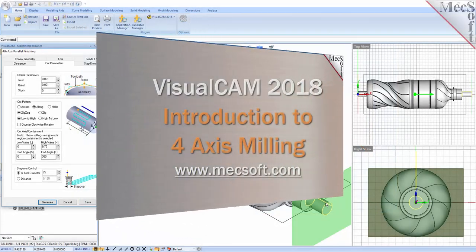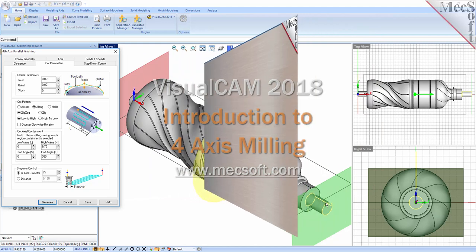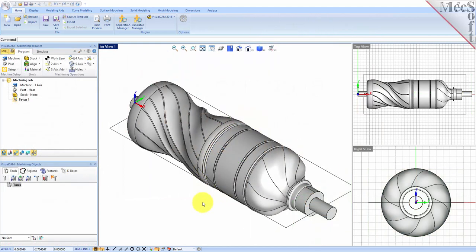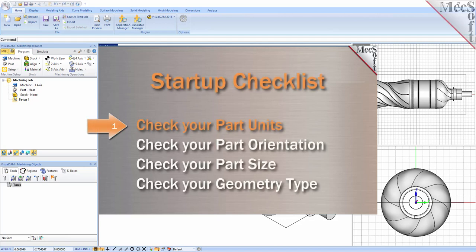Welcome to the VisualCam Quick Start tutorial series brought to you by Mechsoft. Today we'll be introducing 4-axis milling. If you would like the source files used in this video, just drop us an email at support@mechsoft.com and ask for the intro video source files. We'll be happy to send you a download link. Before starting any new CAM project you should first perform the following startup checklist.